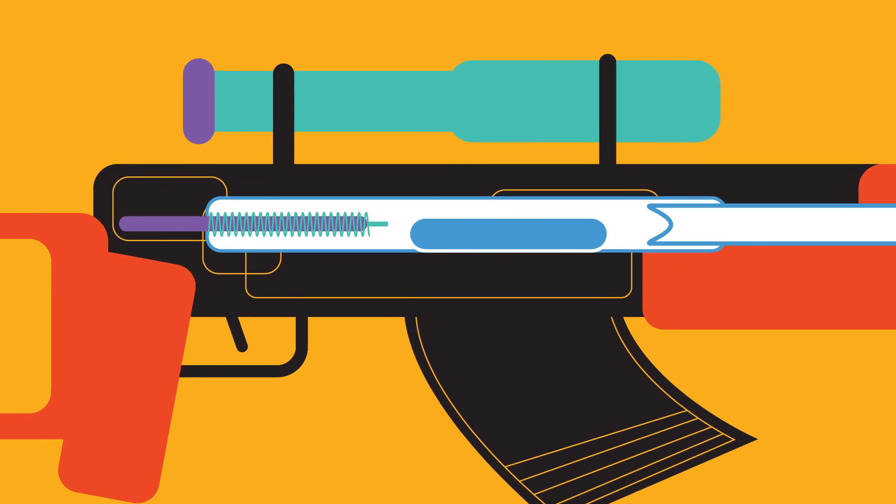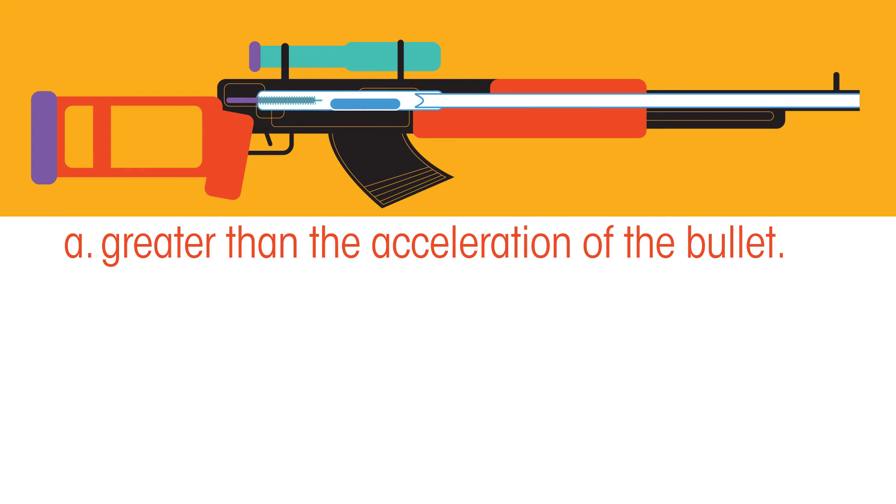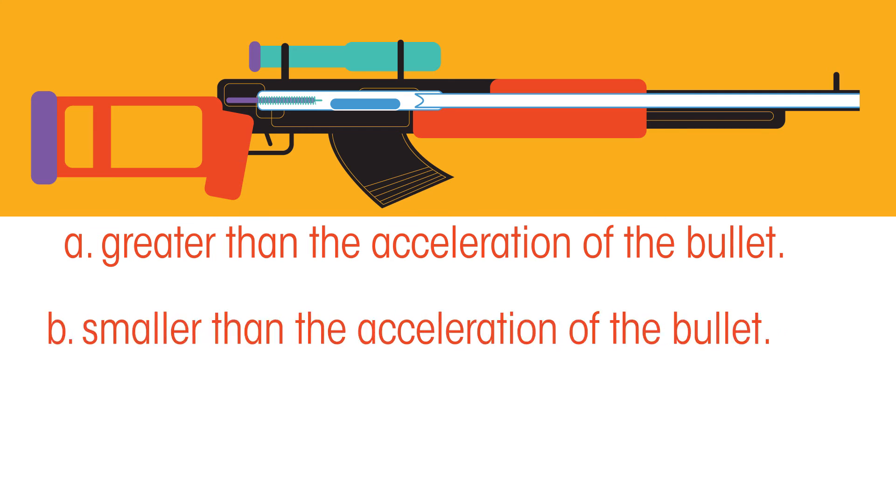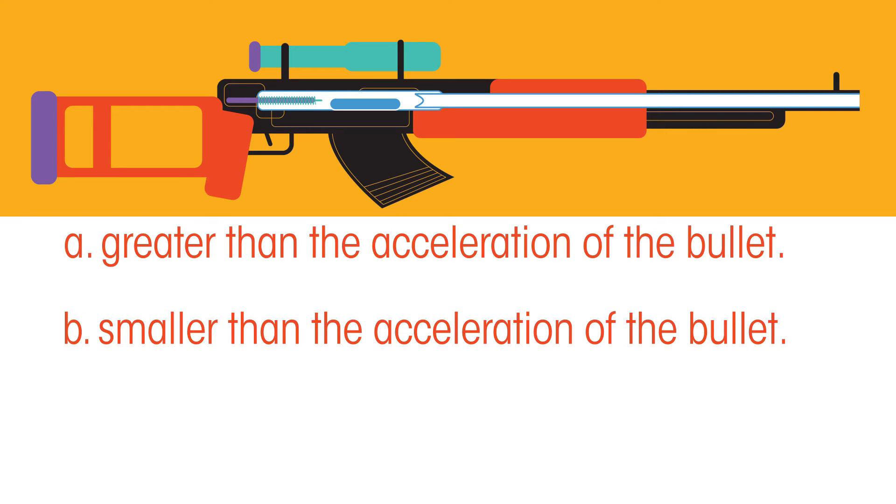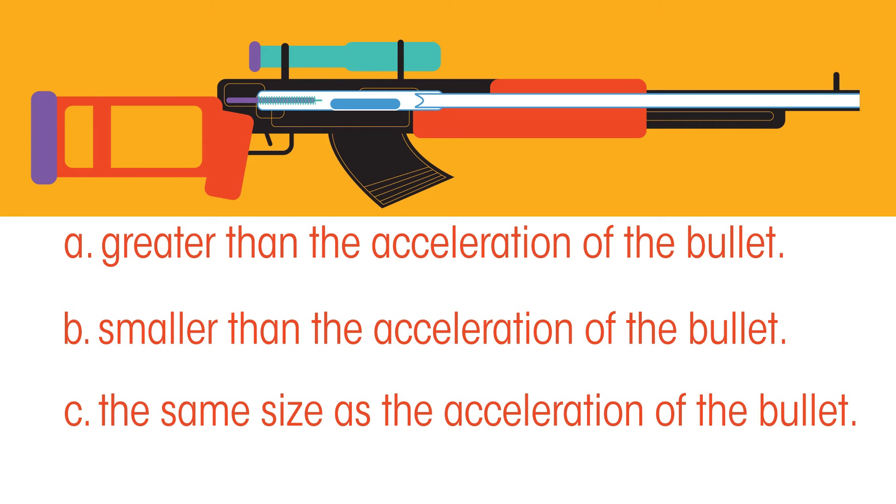The acceleration of the recoiling rifle is a) greater than the acceleration of the bullet, b) smaller than the acceleration of the bullet, or c) the same size as the acceleration of the bullet. Pause the video while you work it out.